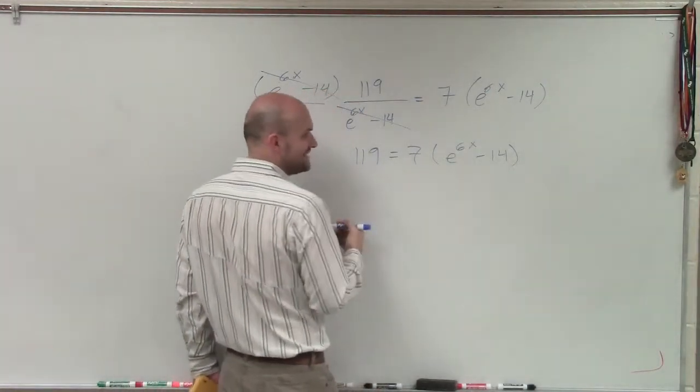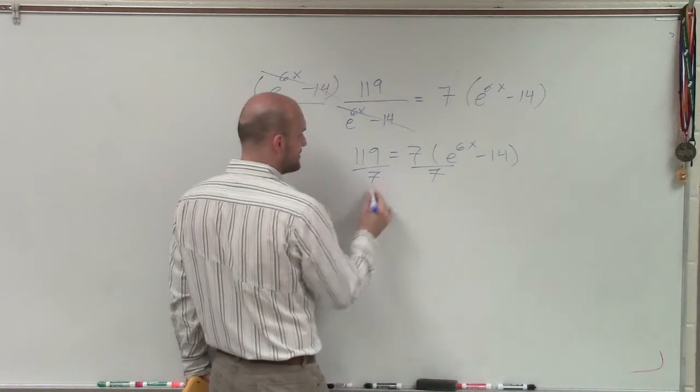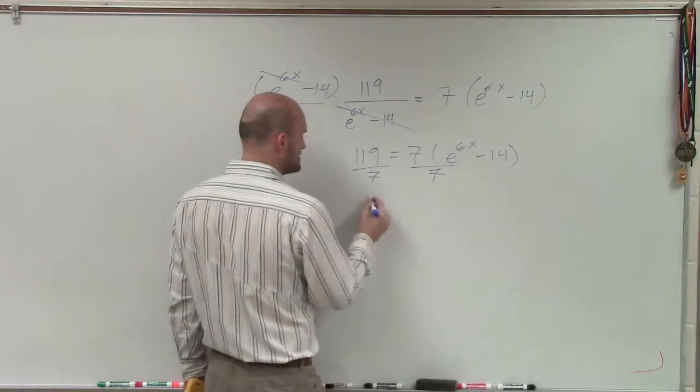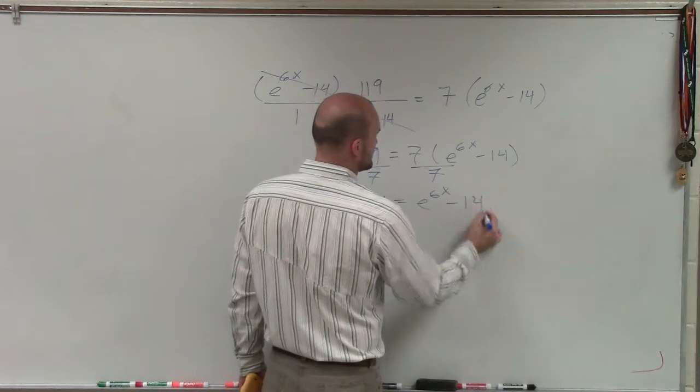So now I need to solve for this e to the 6x. So to do that, I need to isolate it. So I'm going to divide by 7 on both sides. 119 divided by 7 is 17 equals e to the 6x minus 14.